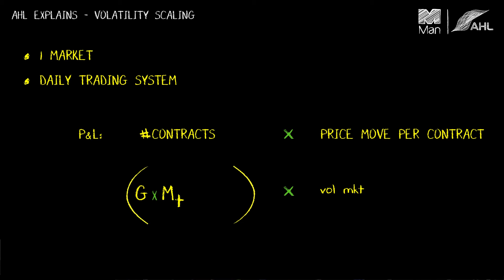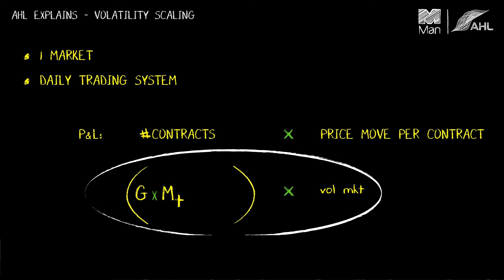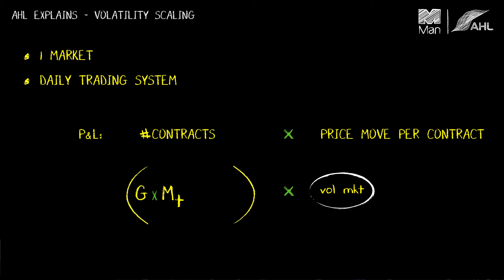The idea of volatility scaling is to make the overall P&L independent of the volatility of the underlying market. The only way to do that is to put a 1 over the volatility of the market into the contracts expression, so that the vol of market cancels out. That's the idea behind volatility scaling — to make the P&L you realise from your trading independent of the volatility of the underlying market.